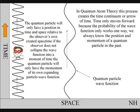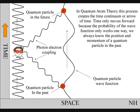Time only moves forward because the probability of the wave function only works one way. We always know the position and momentum of a quantum particle in the past.